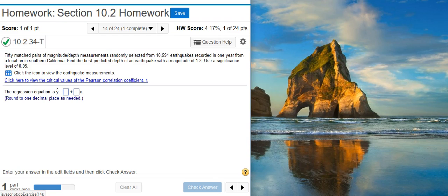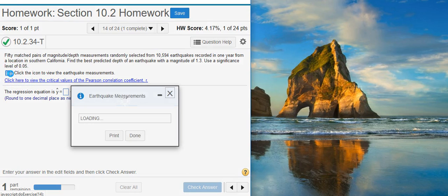Find the best predicted depth of an earthquake with a magnitude of 1.3. Use a significance level of 5%. Okay, the first part of this problem asks us to find the regression equation. To do this, I'm going to take the data and dump it into StatCrunch.